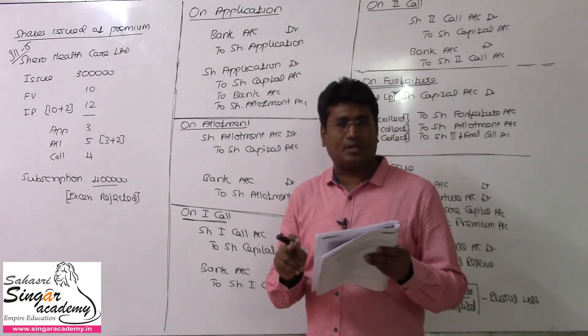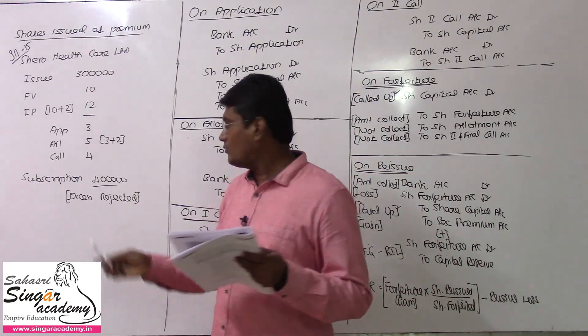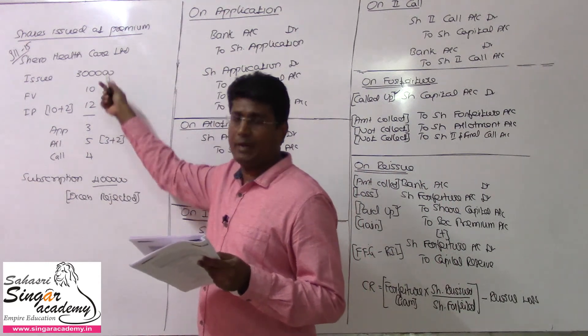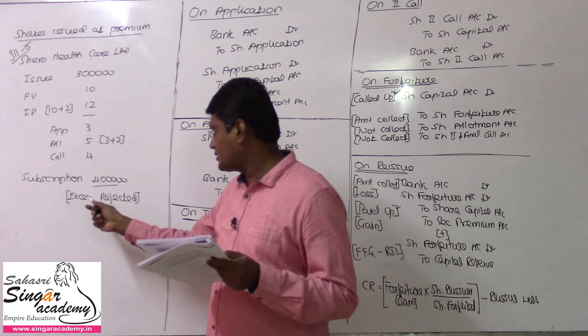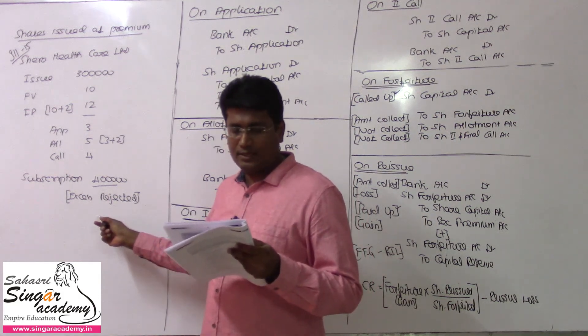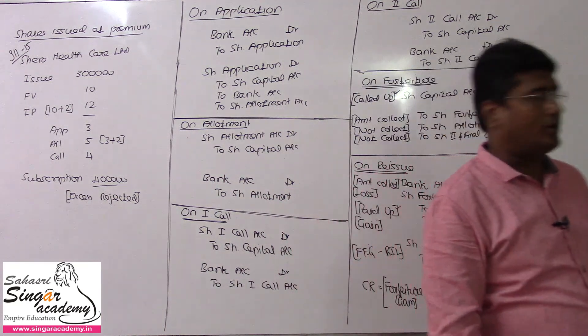There was over-subscription and applications were received for 4 lakhs shares. Only 3 lakhs planned but 4 lakhs applied. The excess applications were rejected by the directors. All money due will be received and rejected amounts refunded. This is not a pro-rata case.